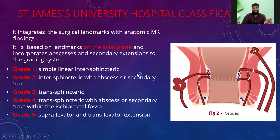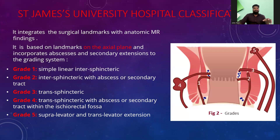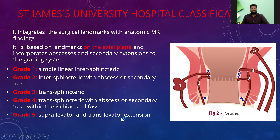What we usually follow is the St. James University classification system, based on the axial plane. It integrates MRI findings and surgical landmarks, giving five types of fistulas: first, simple linear intersphincteric fistula; second, intersphincteric fistula with an abscess; third, transsphincteric fistula; fourth, transsphincteric fistula with an abscess; and fifth, supraelevator or transelevator with extension.